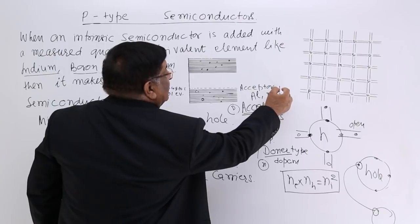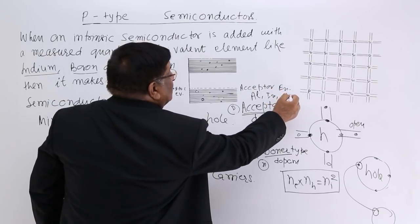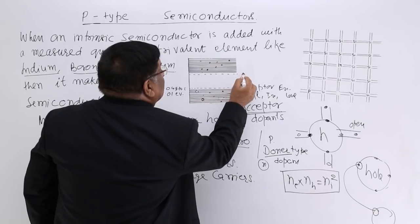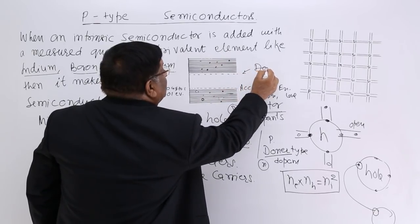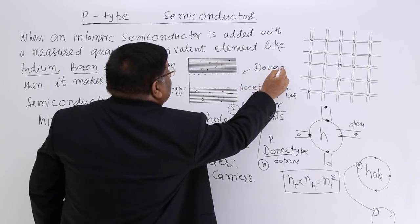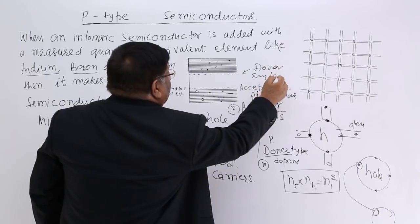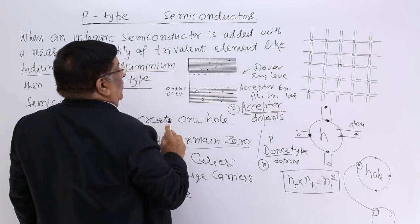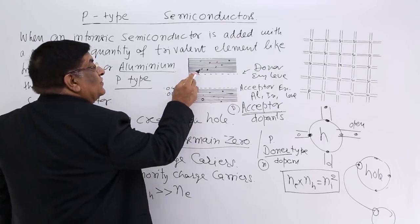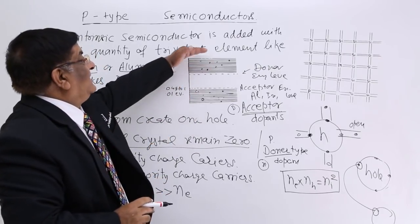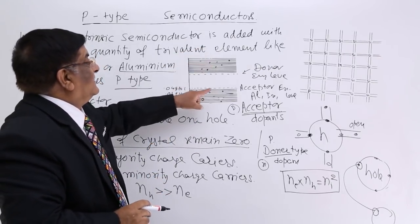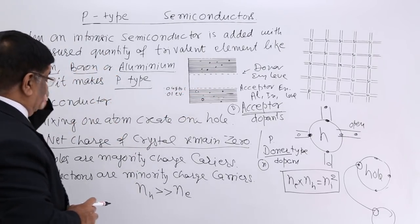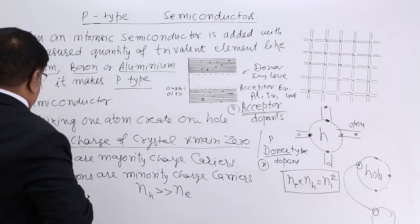The acceptor energy level is very close to the valence band surface. Similarly, the donor energy level for the donor electrons is very close to the conduction band. Both the donor level and acceptor level are very close to their respective band edges and they act effectively as charge carriers.